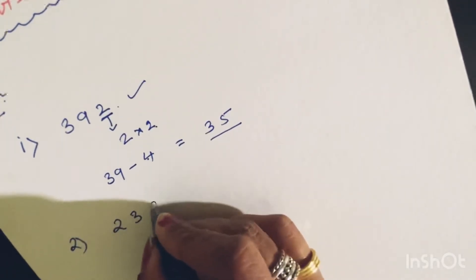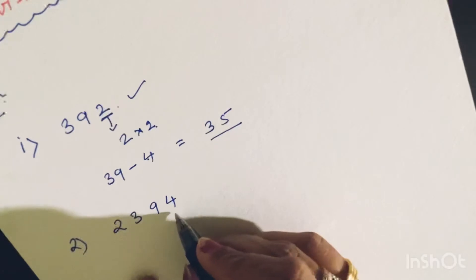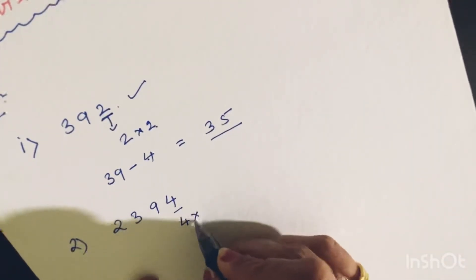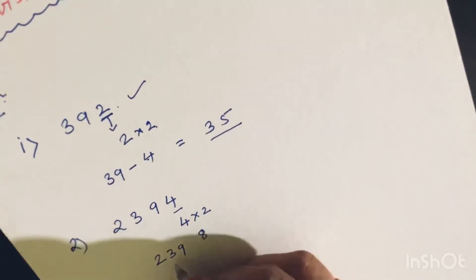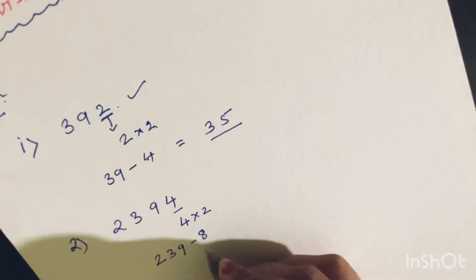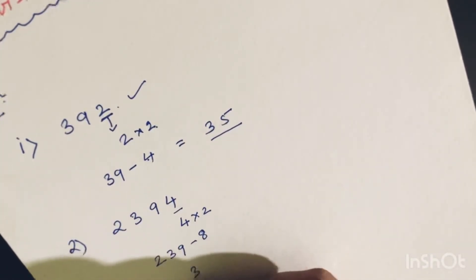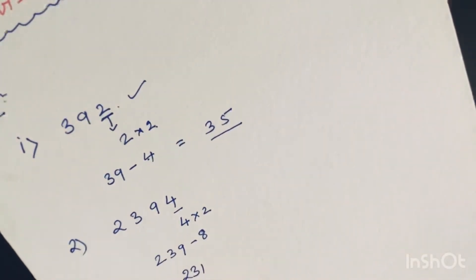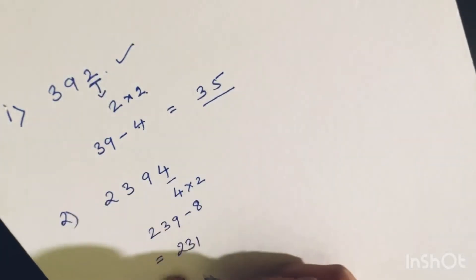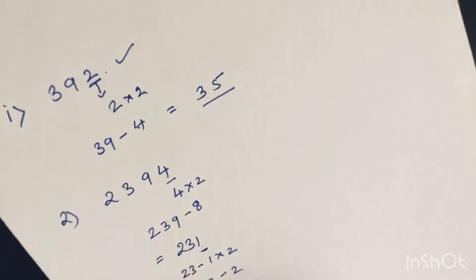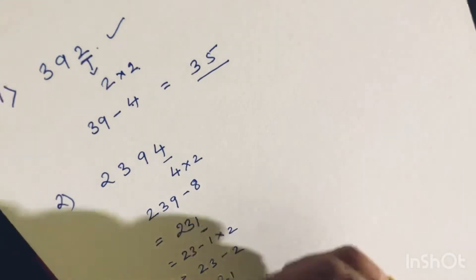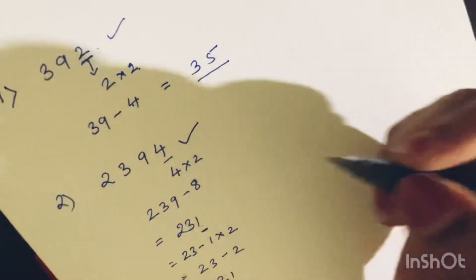The next example is 2394. Again, we take the last digit and double it: 4 times 2 is 8. Now we subtract 8 from the rest of the number, 239. So 239 minus 8 is 231. Now we need to check if 231 is divisible by 7. We apply the same method again: double the last digit — 1 times 2 is 2 — and subtract from the rest: 23 minus 2 is 21. Since 21 is divisible by 7 (7 times 3 is 21), the whole number 2394 is divisible by 7.